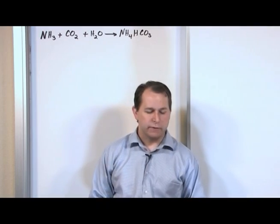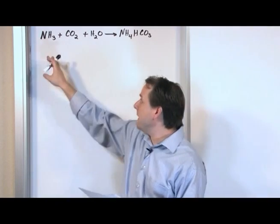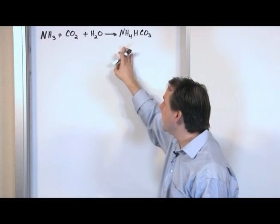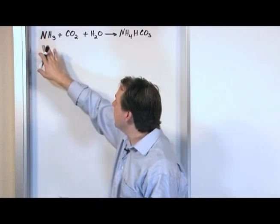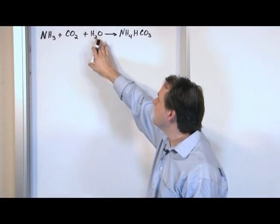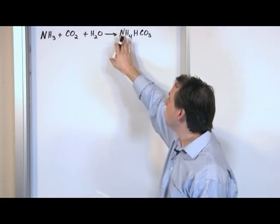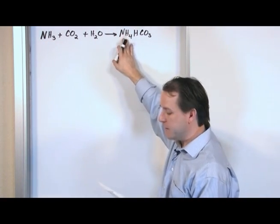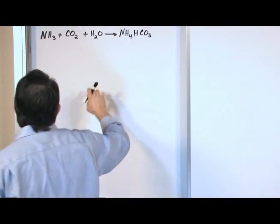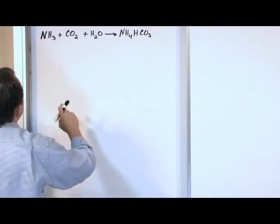Our next problem goes like this. We have a reaction on the board. This is a balanced reaction. We're taking ammonia, mixing it with carbon dioxide and water, and reacting it to make ammonium bicarbonate. And you can see it's balanced.